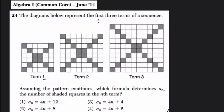The diagrams below represent the first three terms of a sequence: term 1, term 2, and term 3. Assuming the pattern continues, which formula determines a sub n, the number of shaded squares in the nth term?